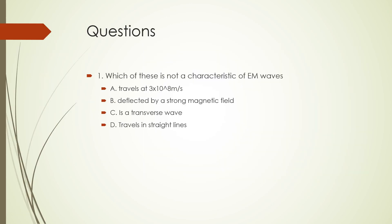Let's answer a few questions to finish up. First question: which of these is not a characteristic of electromagnetic waves? A: travels at 3 times 10 to the power 8 meters per second. B: deflected by a strong magnetic field. C: is a transverse wave. D: travels in straight lines. The correct answer is B, deflected by a strong magnetic field. Deflection by a strong magnetic field is not a characteristic of electromagnetic waves.